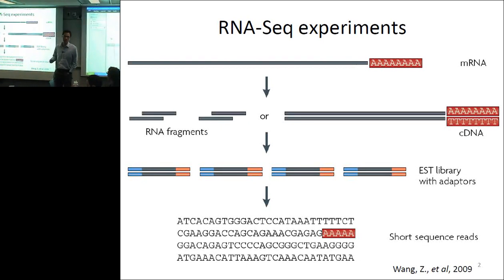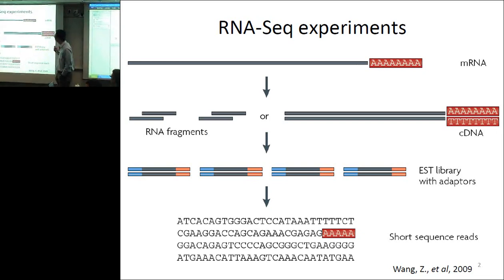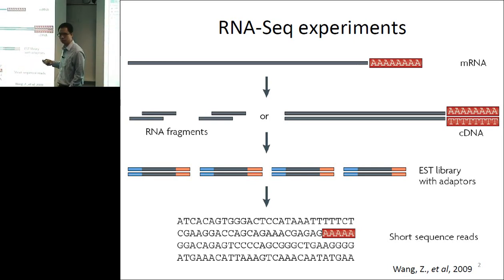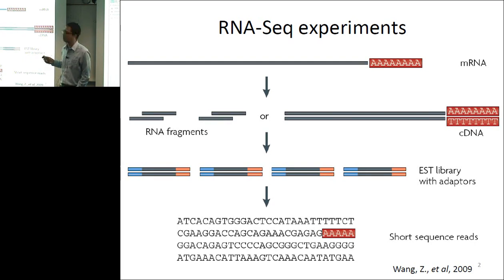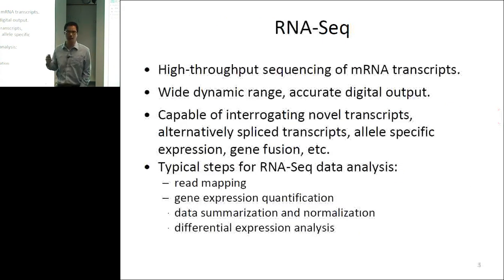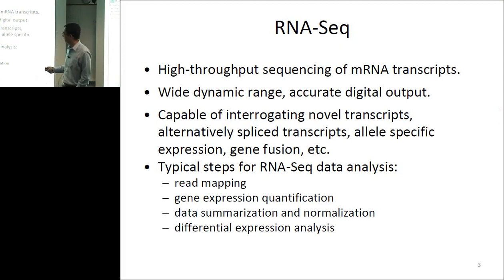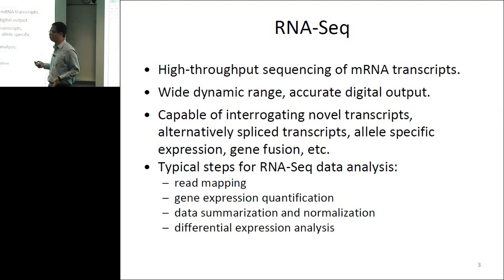I'm sure all of you know RNA-seq very well by now, so I'll go through it briefly. We take mRNA from the sample, break it down into small fragments due to the limitations of sequencing technology, prepare the library, and sequence it. In the end, we get the reads. RNA-seq is popular because of many advantages: it's high throughput, getting cheaper, and provides supposedly better measurements of gene expression than microarray — wide dynamic range, accurate digital counts, and it's capable of detecting novel transcripts, novel splicing, and gene fusions.